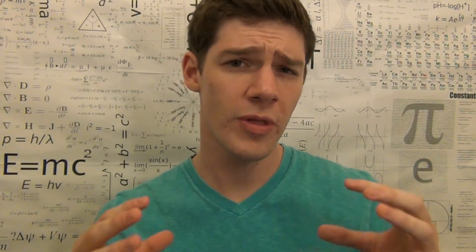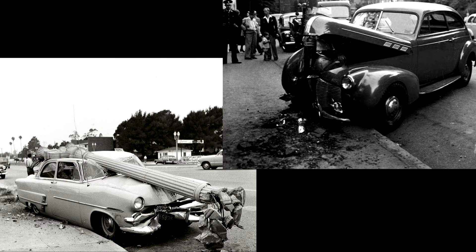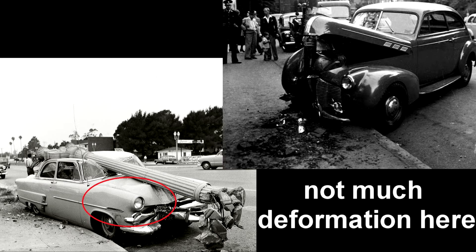The crumple zone wasn't actually invented until about the 1950s, so cars predating this typically stayed extremely rigid during impacts. For example, look at these two light pole crashes from the 1940s. Both of these cars' chassis stayed pretty much intact.